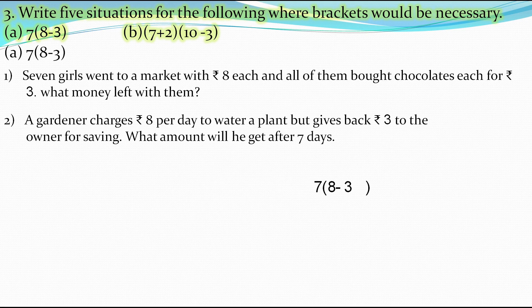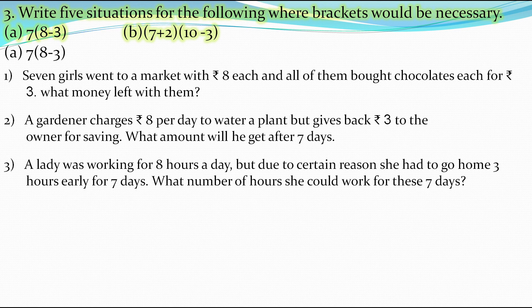The third situation: a lady was working for 8 hours a day but due to certain reasons, she had to go home 3 hours early. So we subtract 3 from 8. For 7 days she is doing the same thing, so we multiply the expression with 7. How many hours could she work over these 7 days? We get the answer after solving this expression.